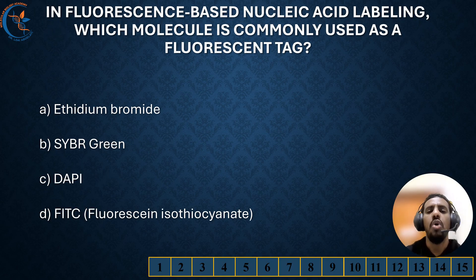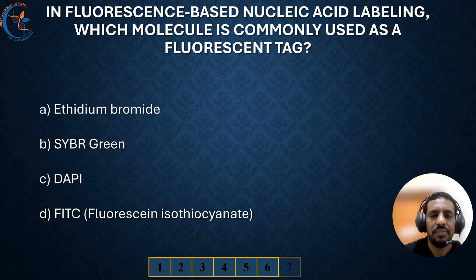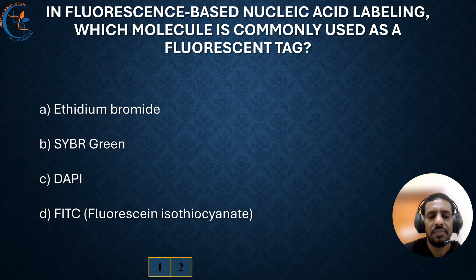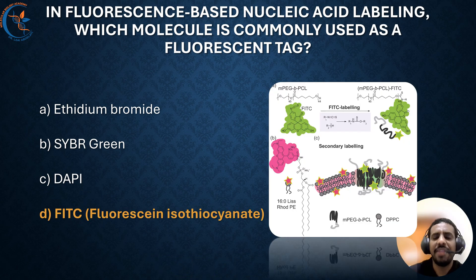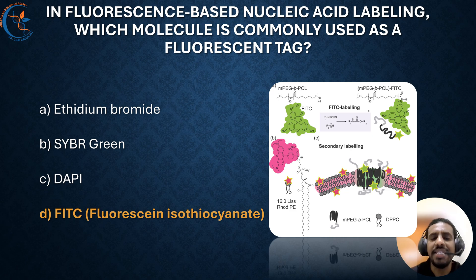In fluorescent-based nucleic acid labeling, which molecule is commonly used as the fluorescent tag? The correct answer is fluorescein isothiocyanate, or FITC. FITC is the commonly used fluorescent tag for labeling nucleic acids. It emits a bright green fluorescence, making it easy to detect labeled sequences in molecular biology applications. Due to its strong signals and stability, FITC allows researchers to visualize and analyze DNA or RNA with high sensitivity, aiding in techniques such as fluorescent microscopy and flow cytometry.